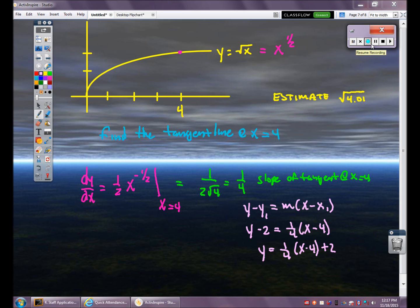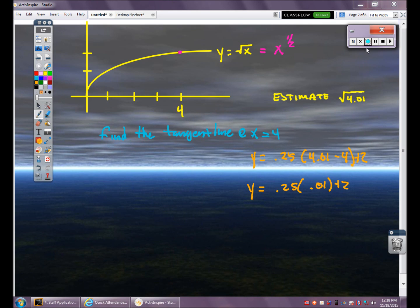And now I'm going to use this equation to estimate the square root of 4.01. I'm going to go ahead and plug in 4.01 for x. 1/4 is 0.25. And then I'm just going to simplify this equation. 4.01 minus 4 is 0.01. Then multiply that by 0.25 and add 2. And you'll get an answer of 2.0025. This estimates the square root of 4.01. Without a calculator.